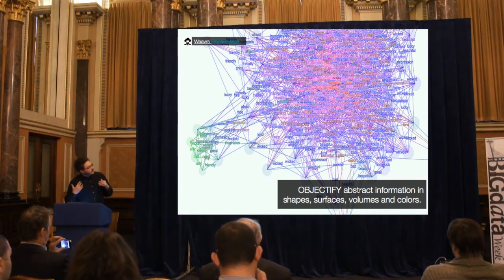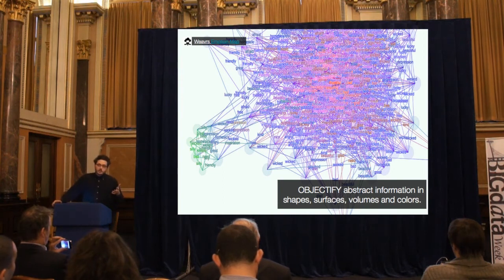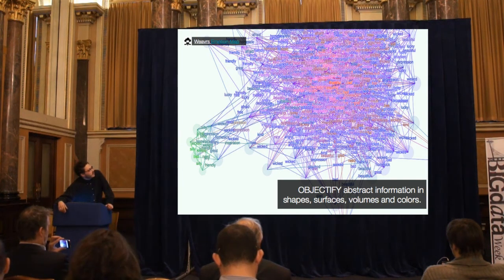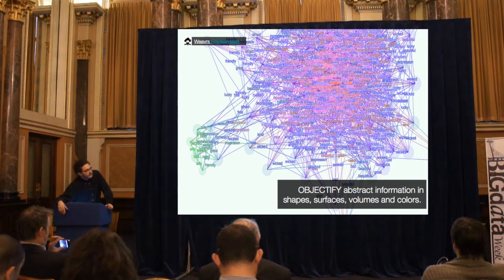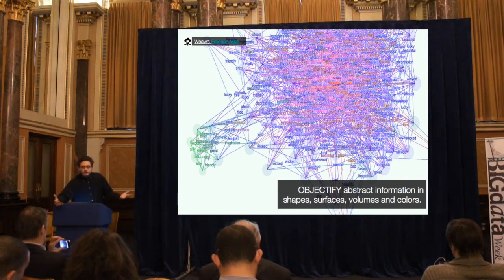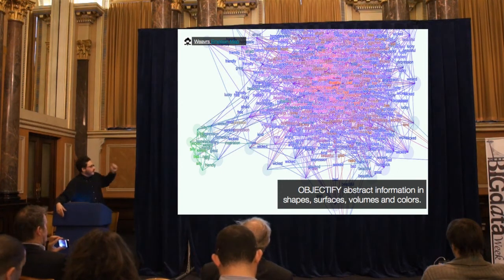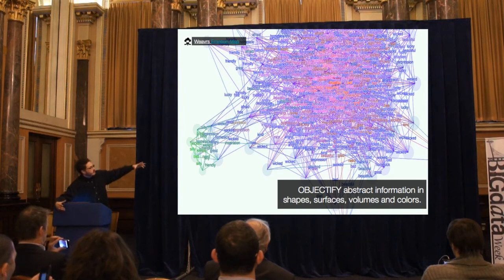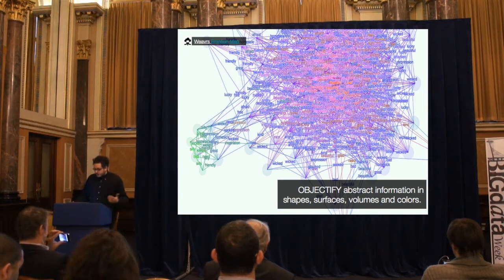Another crucial function of data visualization is objectifying abstract information. This visualization takes concepts and shows the connections between them and how often those concepts come together. This comes from a company called Weavers that designs clones — social media robots that go around the web behaving like normal human beings based on a designed profile. What the visualization shows is what kind of emotions these robots go through in their lives. The green emotions are the ones cropping up, the red ones are the core emotions, and the connections between them show how often those emotions appear together.